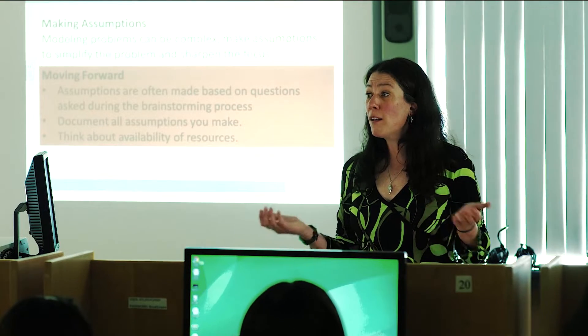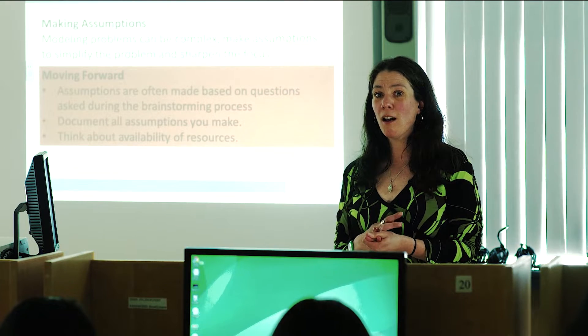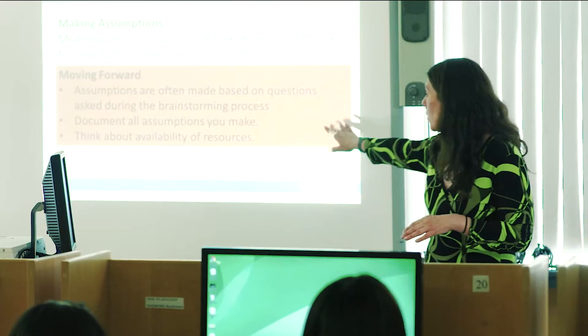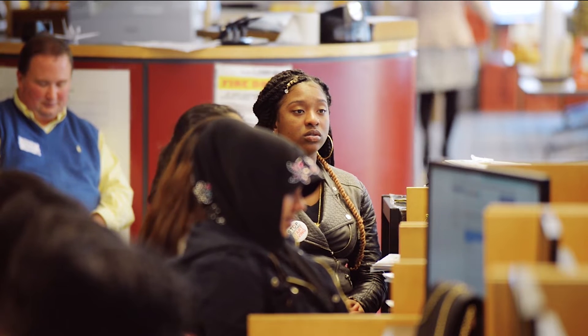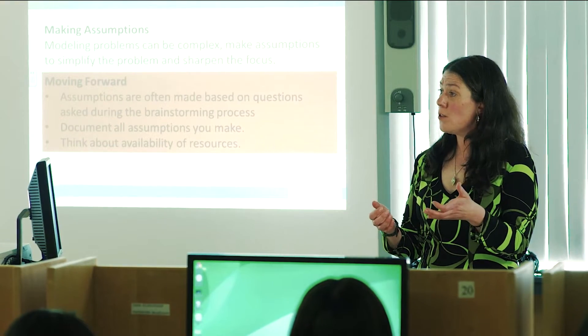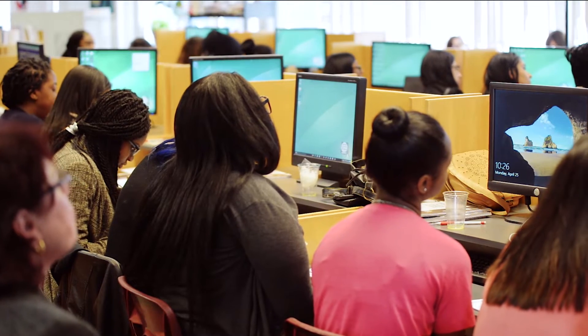Real-world problems are complicated, so one way to simplify the process is to make assumptions. If you reduce the factors that affect your model, you can focus on what's really important. These are questions you ask during brainstorming that lead you to decide what to include in your model. You want to write everything down when making assumptions, and think about the availability of your resources. You might Google for data, or if you can't find information, you'll have to make an assumption.